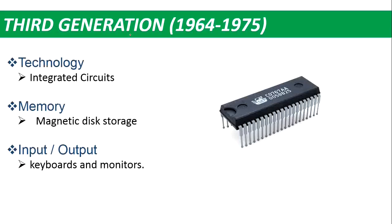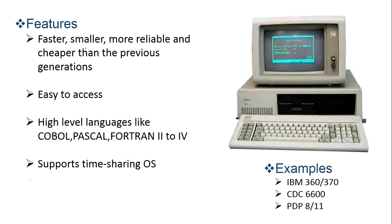Next are third generation computers, from 1964 to 1975. In the third generation, integrated circuits were used, which combined many transistors, resistors, and capacitors onto each chip. Therefore, the size of computers was reduced quite a bit. Magnetic disk storage was used for memory, and keyboards and monitors were used for input and output. These were very fast, small, reliable, and cheap.